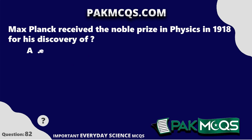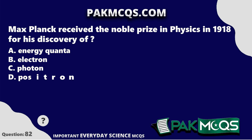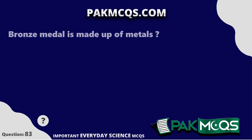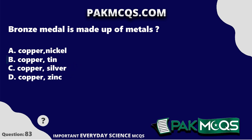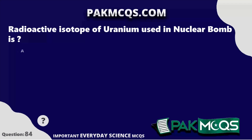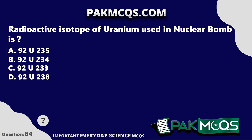Max Planck received the Nobel Prize in Physics in 1918 for his discovery of Energy Quanta. Bronze medal is made up of Copper and Tin. The radioactive isotope of uranium used in nuclear bombs is 92 U-235.